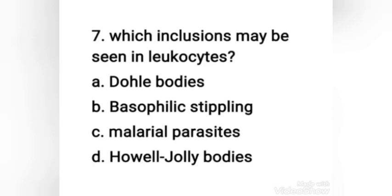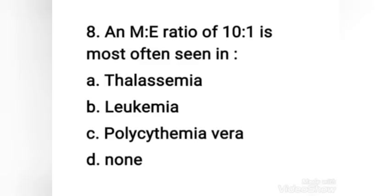Next question: which inclusions may be seen in leukocytes — Döhle bodies, basophilic stippling, malarial parasites, or Howell-Jolly bodies? The right answer is option A, Döhle bodies. Döhle bodies are RNA-rich areas within polymorphonuclear neutrophils that are oval and light blue in color. Although often associated with infectious states, they are seen in a wide range of conditions including hemolytic and pernicious anemia, chronic granulocytic leukemia, and therapy with antineoplastic drugs. The other options are associated with erythrocytes.